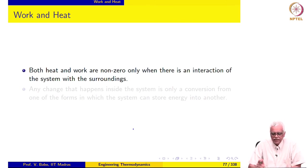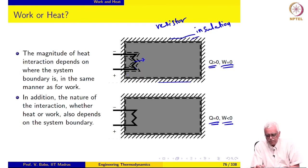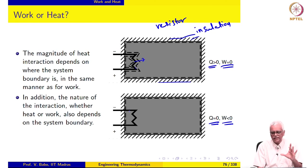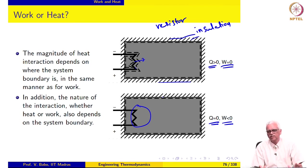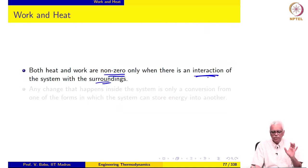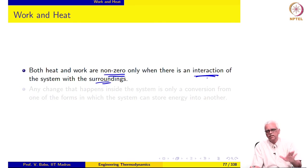Both heat and work are nonzero only when there is an interaction of the system with the surroundings. There is a common misconception that because ohmic heating is occurring and the contents are getting heated, heat is being supplied to the system. Notice that heat does not cross the system boundary in that case — only electrical work crosses the boundary. The heat transfer between the resistor and the gas inside the vessel is not crossing the system boundary, so it cannot be classified as a heat interaction.